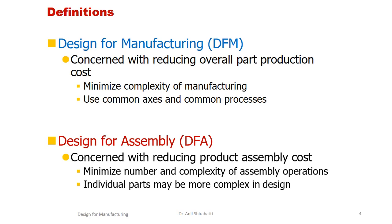In the case of design for assembly, we are mainly concerned about reducing the overall cost and time for the product to be assembled. We have to minimize the number of parts to be assembled and also the complexity dealing with assembly operations. Individual parts can be complex, but when they go into the assembly, it should not make the assembly process very complicated. Whenever we are designing any product, we have to think how we can reduce manufacturing cost and assembly cost without compromising on quality.